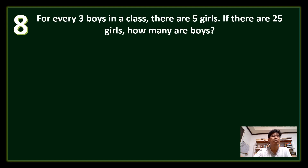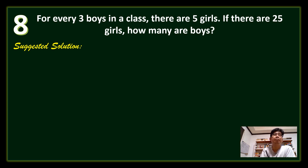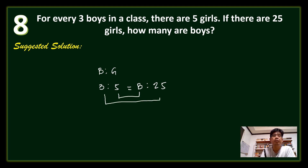Question number 8: For every 3 boys in a class, there are 5 girls. If there are 25 girls, how many are boys? Using the cross-product property of proportion, the ratio of boys to girls is 3 to 5. Let B be the number of boys: B is to 3 as 25 is to 5. The product of the means equals the product of the extremes: B equals 3 times 25 divided by 5. 25 divided by 5 is 5, and 3 times 5 is 15.